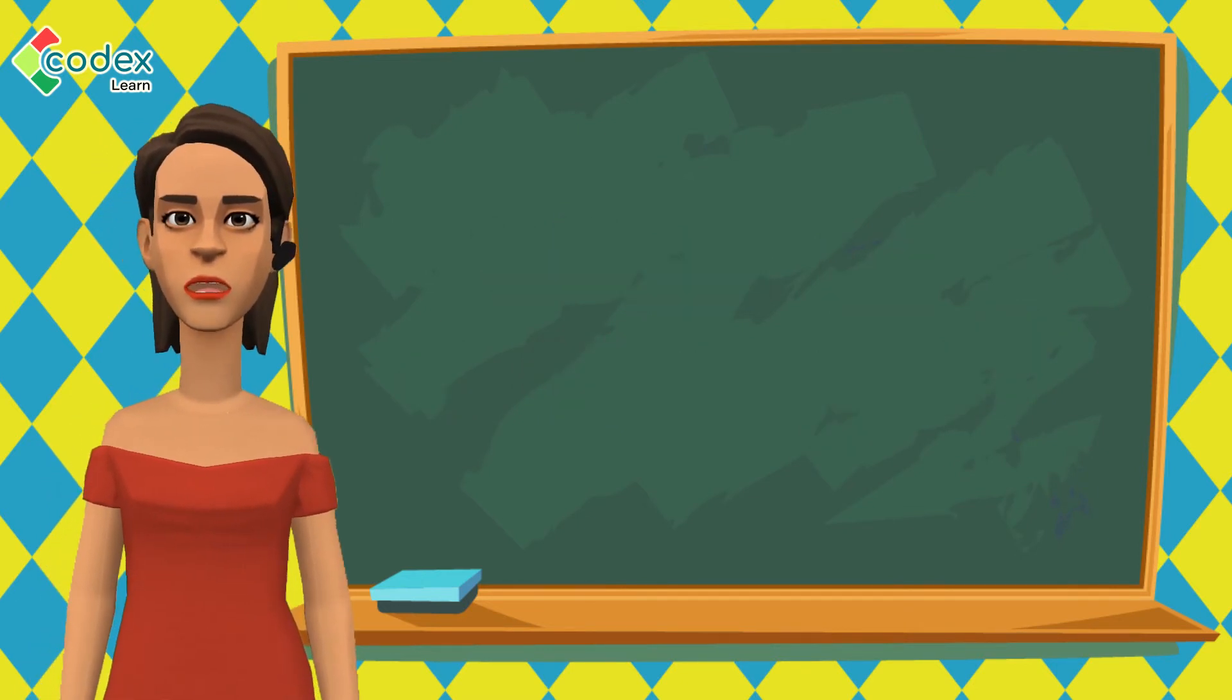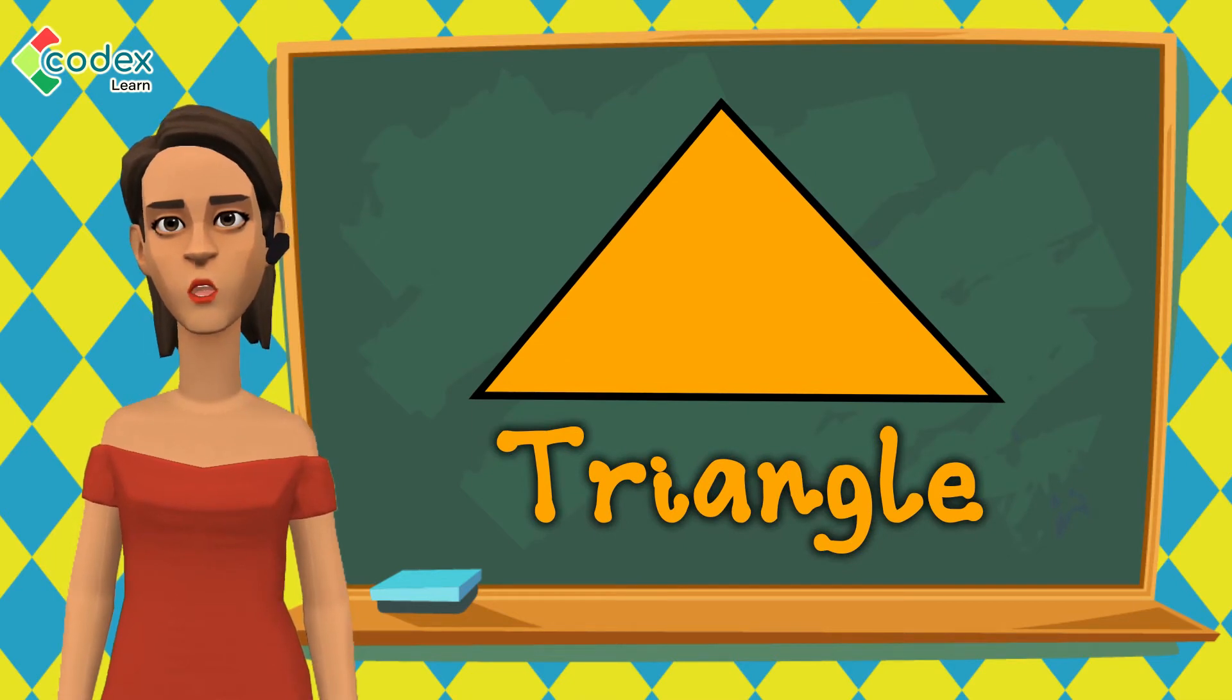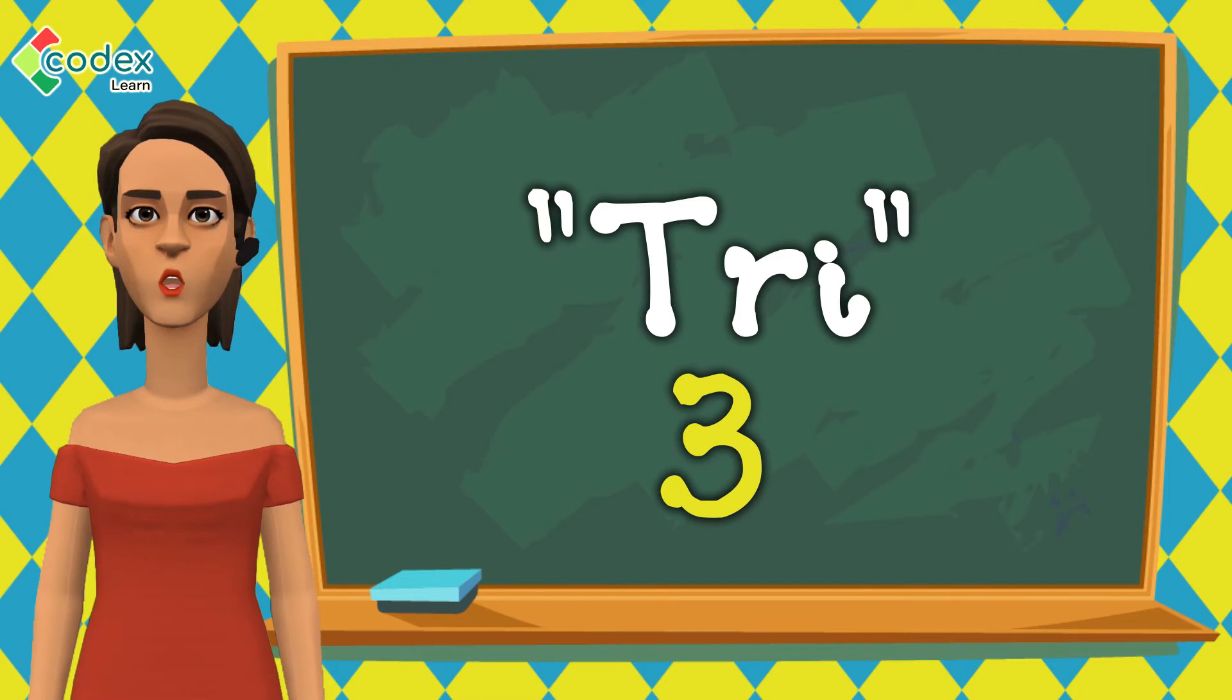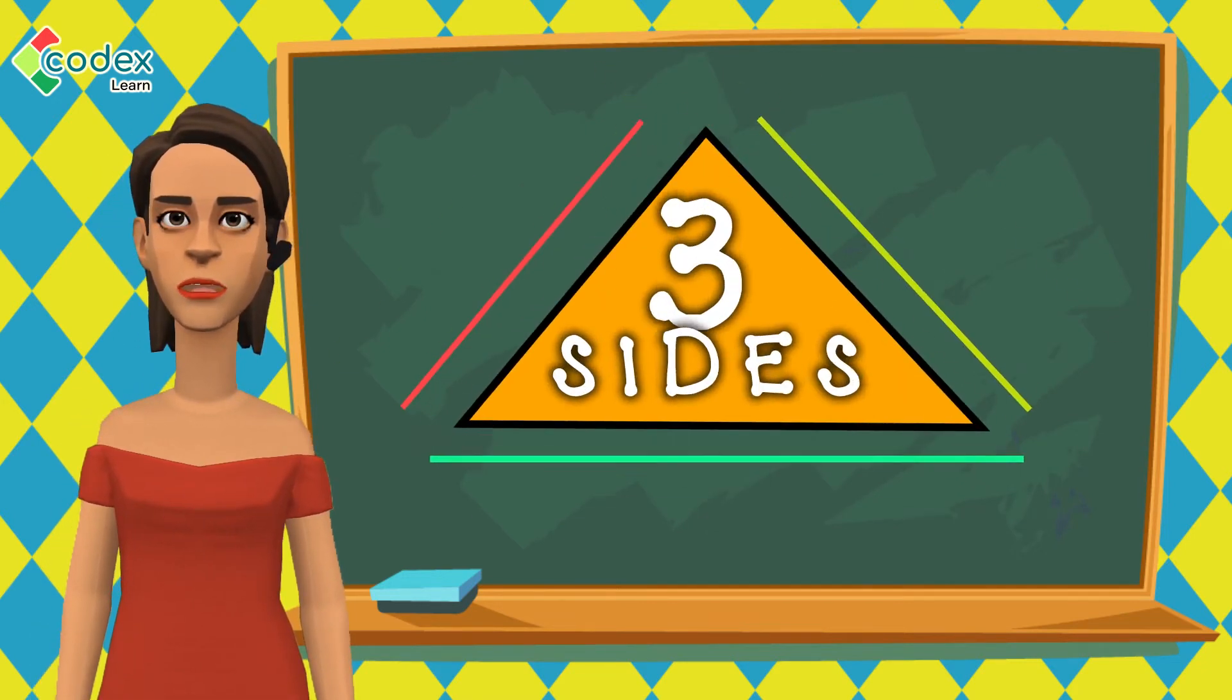A triangle is a common shape we see all the time. Just like the name says, tri means three. Therefore, a triangle is a shape with three sides.